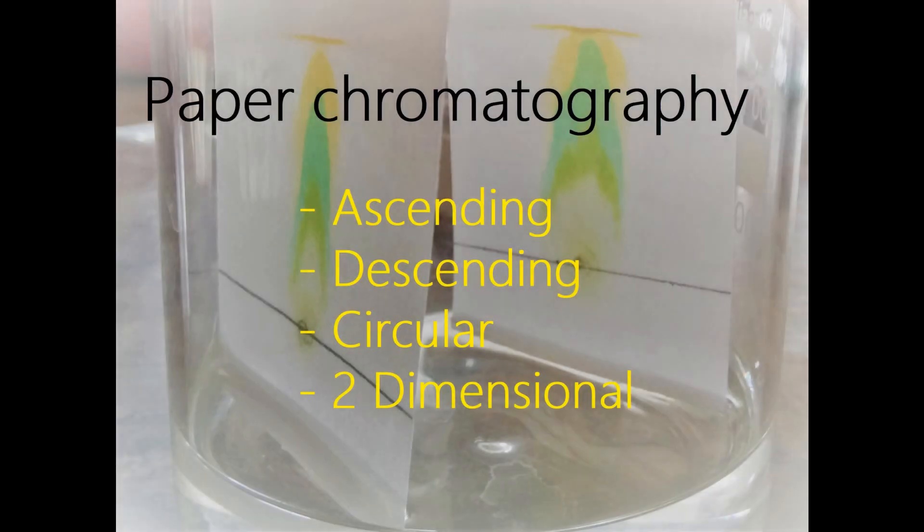Paper chromatography is subdivided into various types such as ascending, descending, circular and two-dimensional paper chromatography. In this video, we'll be employing the ascending type of paper chromatography. For this experiment, we'll need the following.